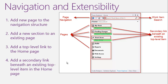Each page has a top-level link. This architecture gives us extensibility: we can add a new page to the navigation structure itself, add a new section to an existing page, or add a top-level link to the home page. We can also add a secondary link beneath an existing top-level item in the home page. It is important to understand this architecture especially if you plan to develop an extension for Team Explorer.